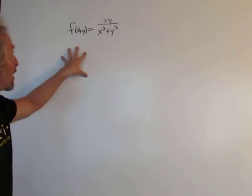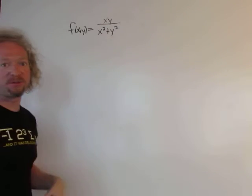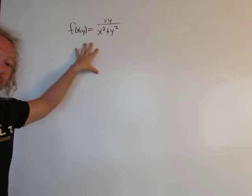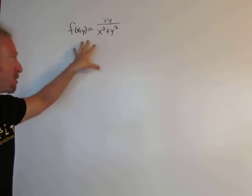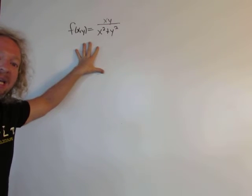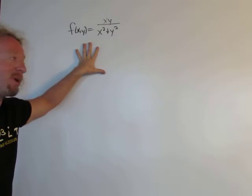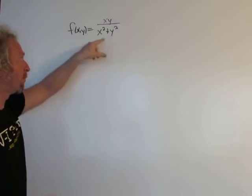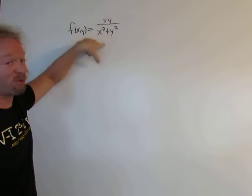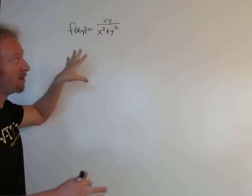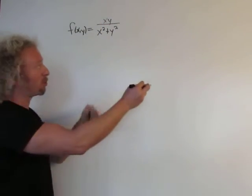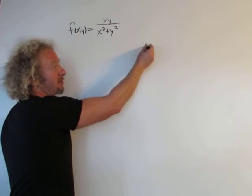Today we have a function of two variables and we're going to find the partial derivatives with respect to x and with respect to y. This is a harder problem — it looks like we're going to have to use the quotient rule. So as a refresher, if you don't remember the quotient rule, it says if you have f over g and you take the derivative...